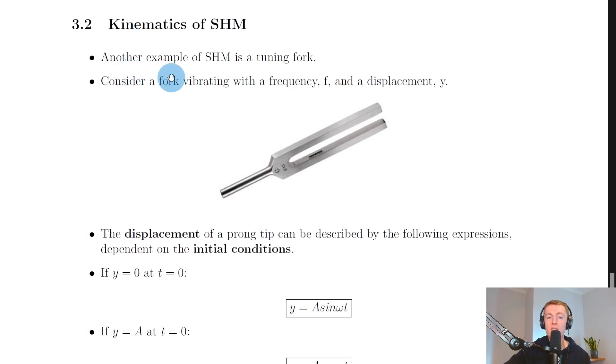Another example of simple harmonic motion is a tuning fork. Consider a tuning fork vibrating with a frequency F and a displacement Y. When you strike a tuning fork, the two prongs are going to vibrate back and forth, and that's what produces the sound you hear.